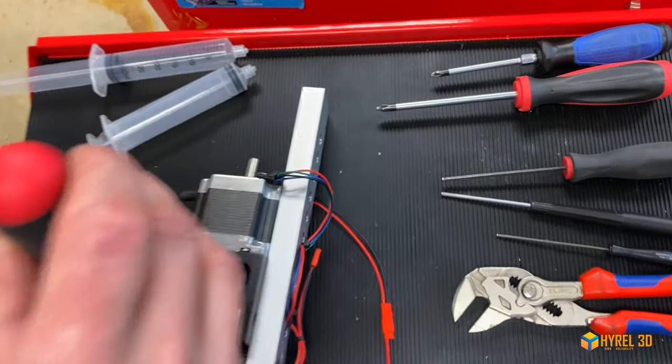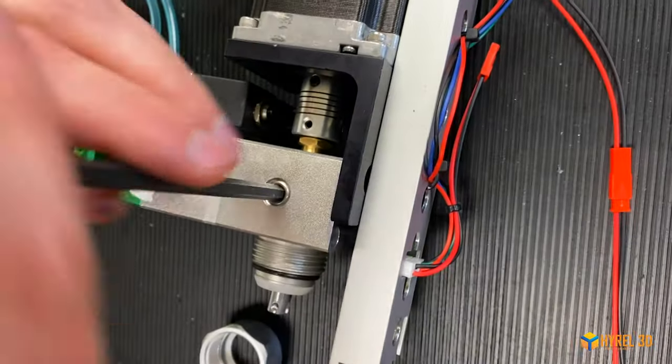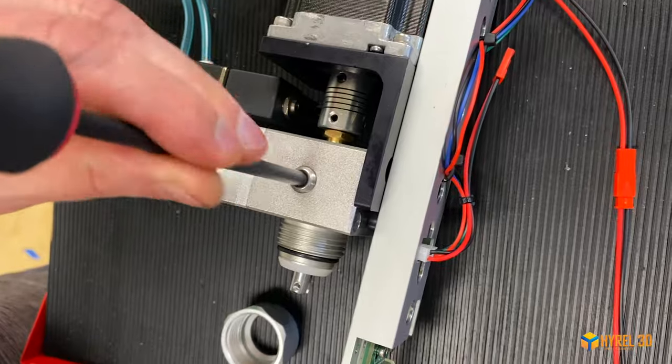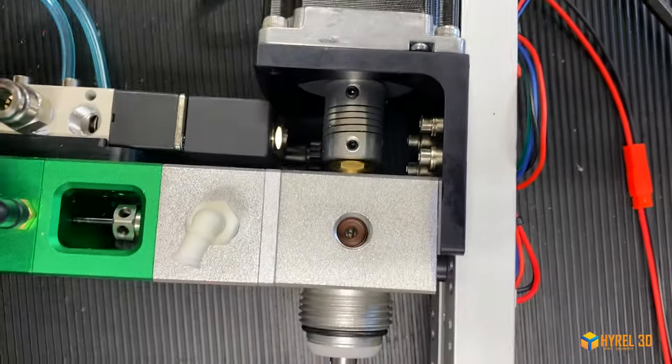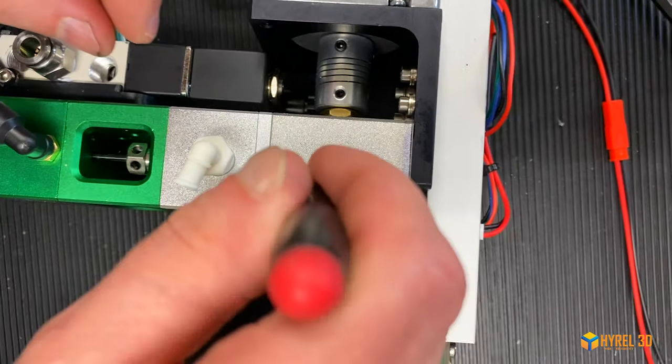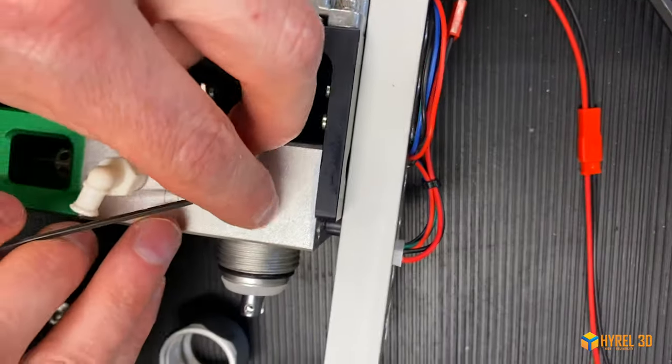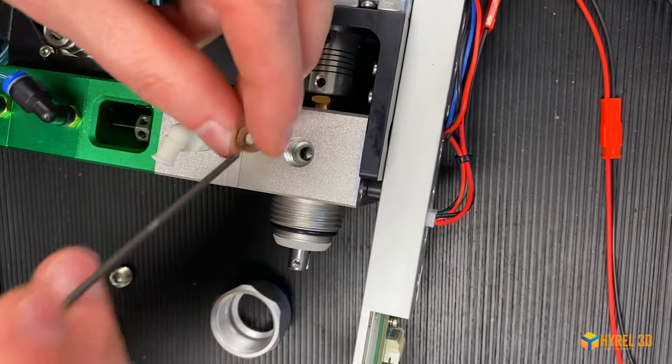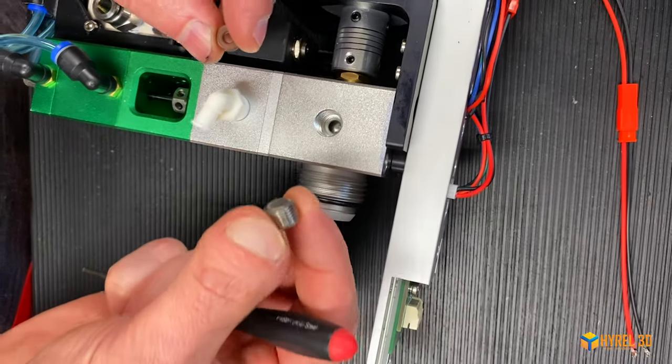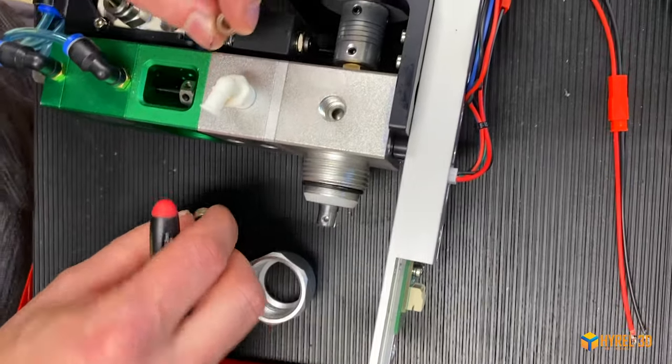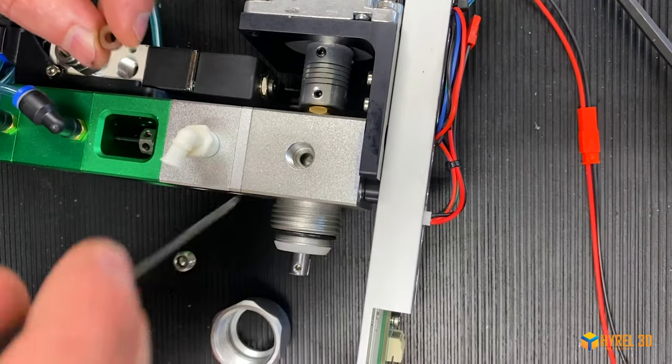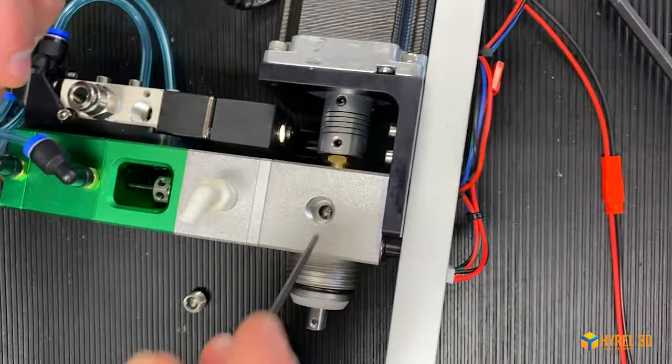If that doesn't work, or if you want to get more detailed, this access hole on the side can be removed with a five millimeter hex driver. Depending on which version you have, some have an o-ring in here and some use teflon tape as the thread seal. Just keep that in mind when reassembling—if you don't have an o-ring, use teflon tape. You can see into the hole here.